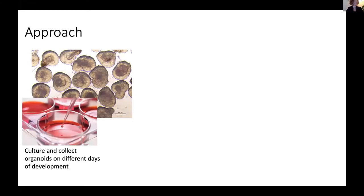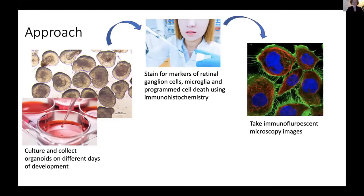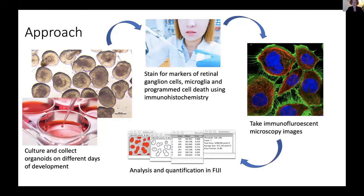First, we grew human-induced pluripotent stem cells, directed them to follow a neuronal lineage, and further differentiated them into 3D retinal tissue. The retinal organoids were collected at various time points during development. They were fixed, cryo-sectioned, and immunostained for markers of retinal ganglion cells, microglia, and programmed cell death using immunohistochemistry. I took immunofluorescent images on a confocal microscope and did the analysis and quantification in Fiji.